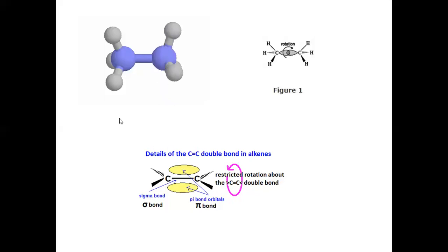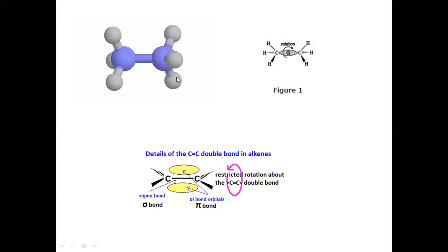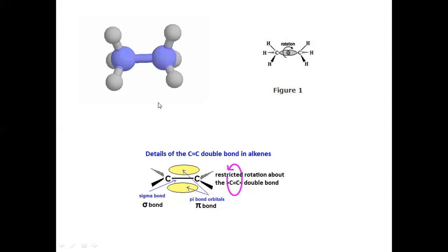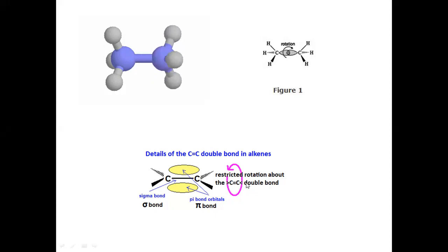If we compare this with a carbon-carbon single bond, consider the structure of ethane — CH3 single bond CH3. In ethane, which is an alkane, there is a carbon-carbon single bond, and this carbon-carbon single bond is always in rotation; it continuously rotates so no hydrogen position is fixed. But there is always a restricted rotation about the carbon-carbon double bond.